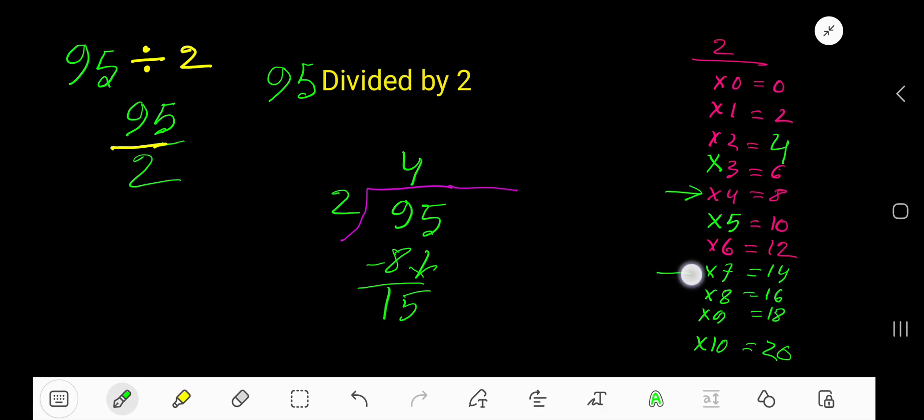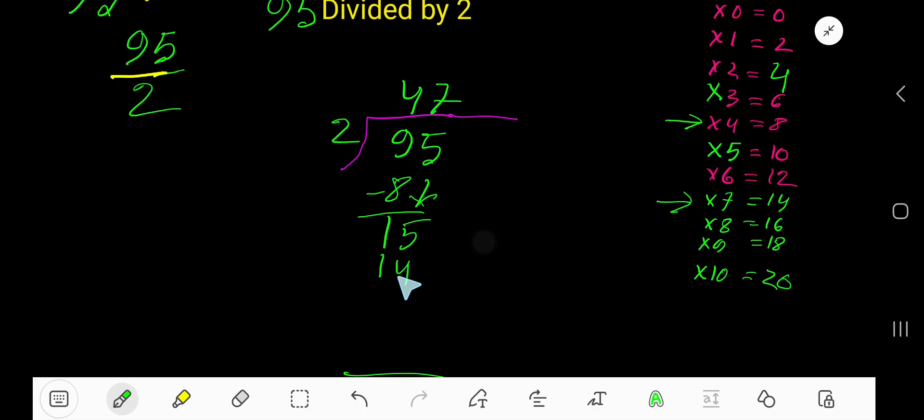Which is greater, so we have to take here 7 times. 7 times 2 is 14. Subtract, you are getting 1. So your answer is 47 remainder 1. But if you want to write your answer in decimal form.